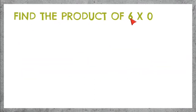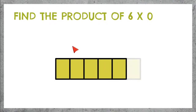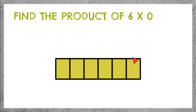Find the product of 6 times 0. That means we need 6 parts with 0 inside of each part. If we count up everything we have inside, we know that 6 times 0, or 6 parts with 0, equals 0.